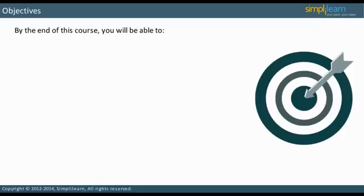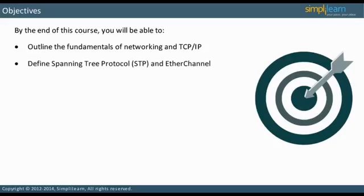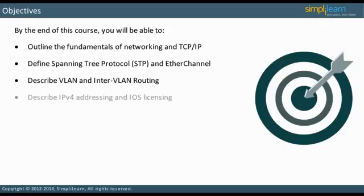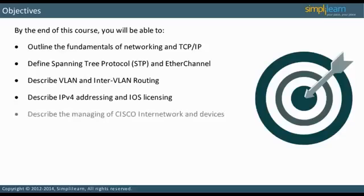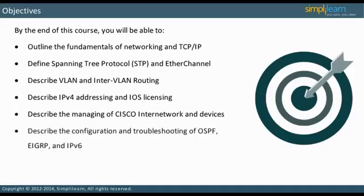By the end of this course, you will be able to: outline the fundamentals of networking and TCP/IP; define Spanning Tree Protocol (STP) and EtherChannel; describe VLAN and inter-VLAN routing; describe IPv4 addressing and IOS licensing; describe the managing of Cisco internet network and devices; describe the configuration and troubleshooting of OSPF, EIGRP, and IPv6; and define Wide Area Networks (WAN).